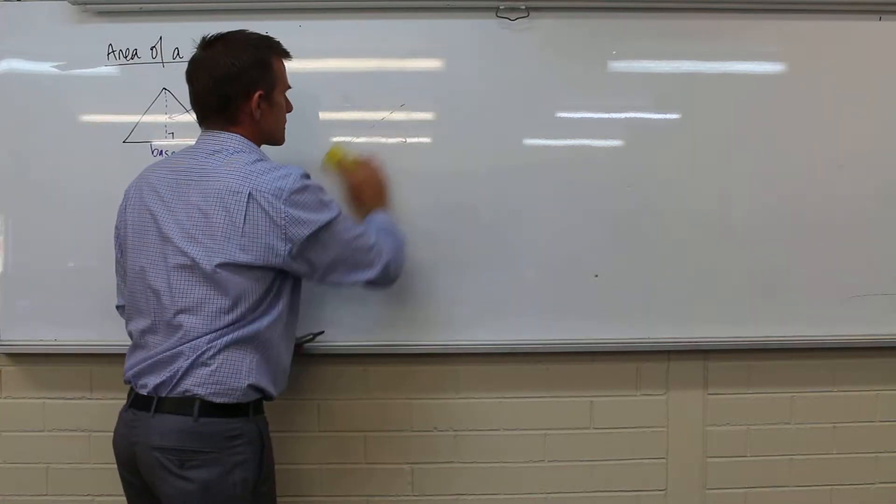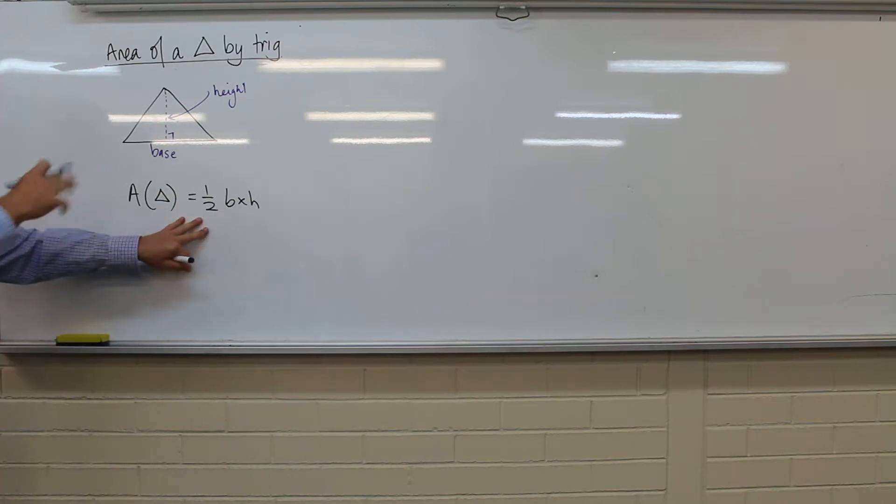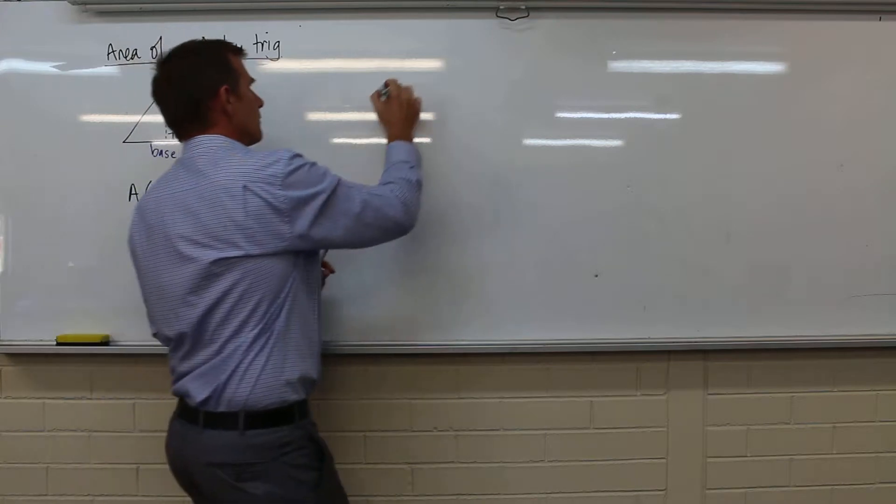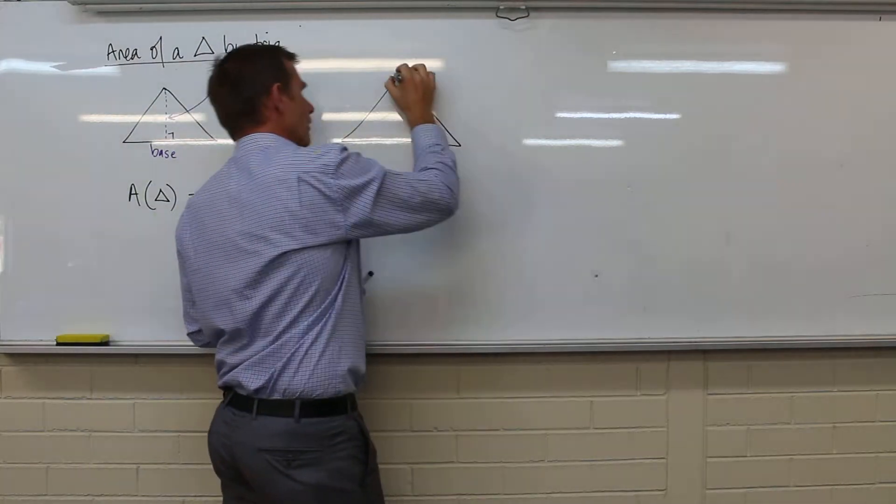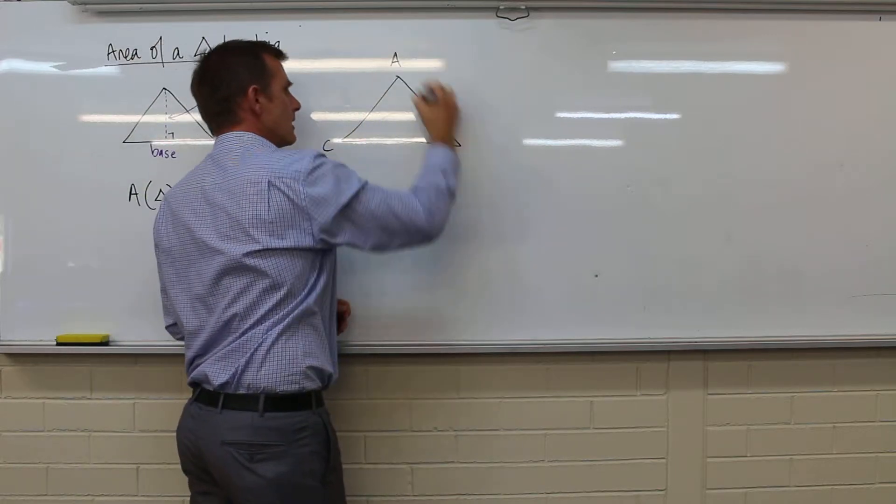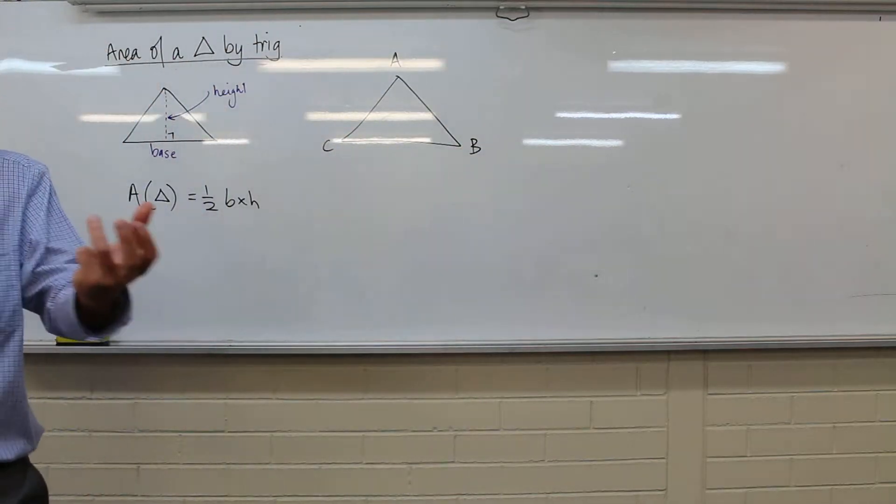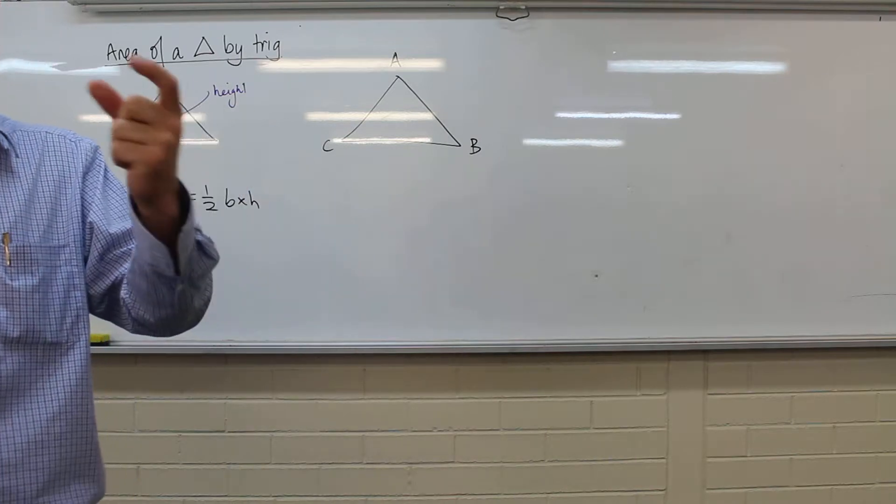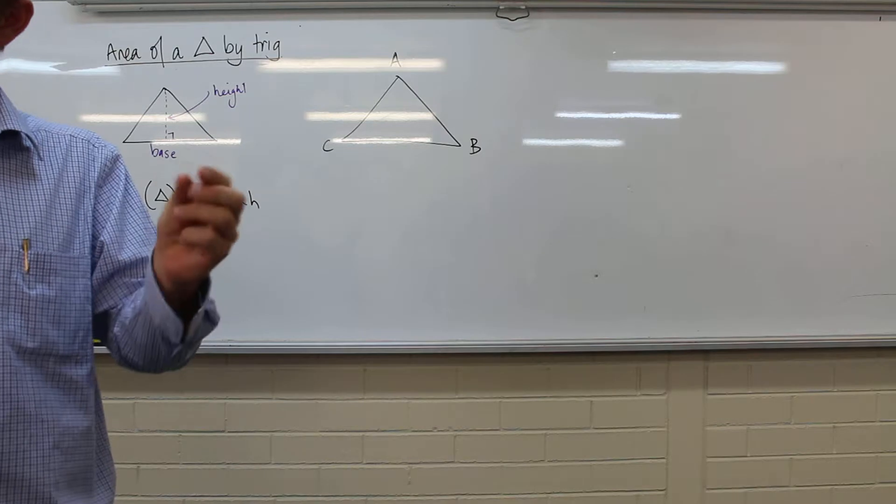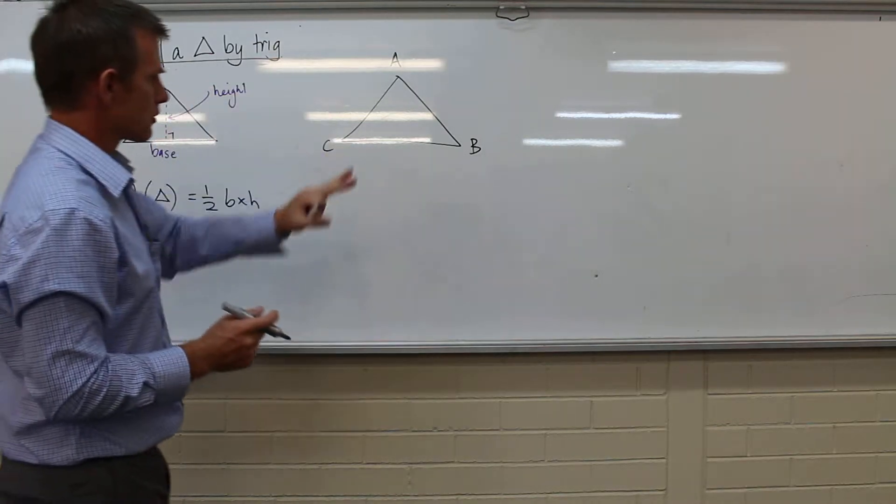So let's get into this trig stuff. So we've got this formula, we're actually going to use that, and we need that. But I'm going to redraw this triangle, and I'm going to draw it with some different labels on it. I'm going to call this C here, I'm going to call this A here, and call this B here. And remember we use the capital letters for the angles and the small letters for the sides.